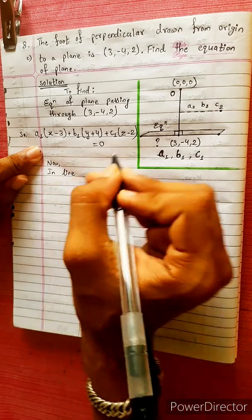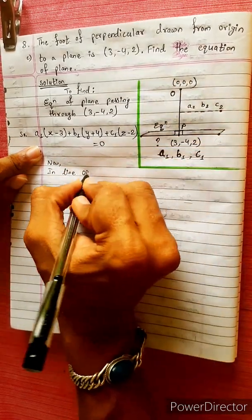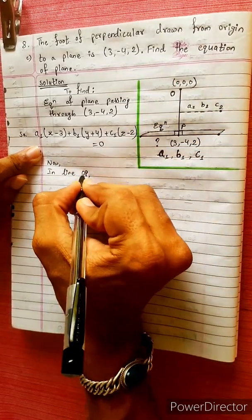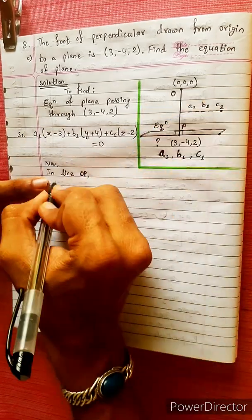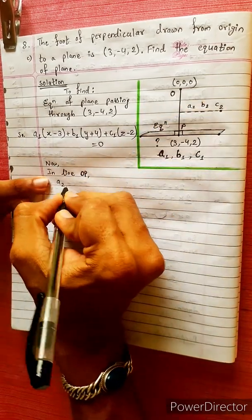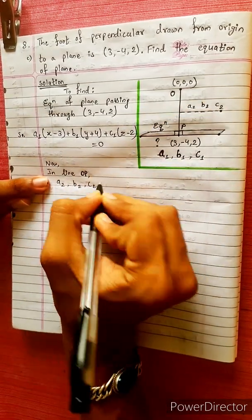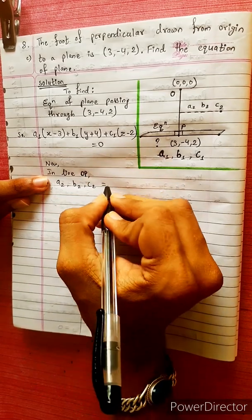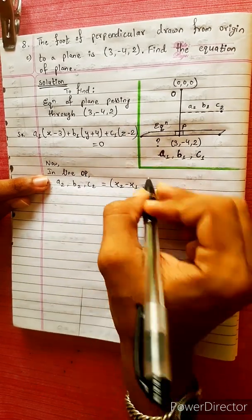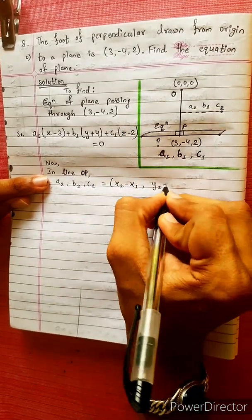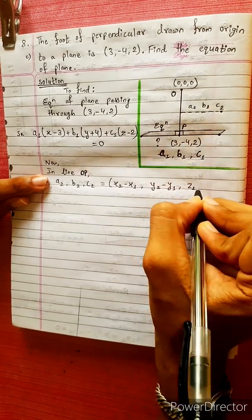In line OP, O is the origin and P is the foot of perpendicular. In line OP, the direction ratio A2, B2, C2 equals to (x2 minus x1), (y2 minus y1), (z2 minus z1).